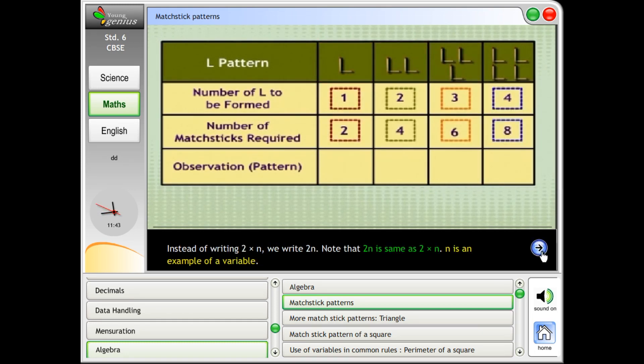Instead of writing two times N, we write 2N. Note that 2N is same as two times N. N is an example of a variable.